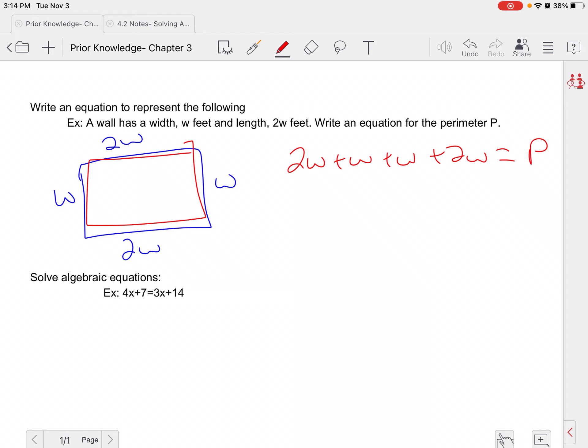And I know that when I have like terms, I like to combine them. So 2 plus 1 plus 1 plus 2 would be 6w equals p. Now that would be my equation.